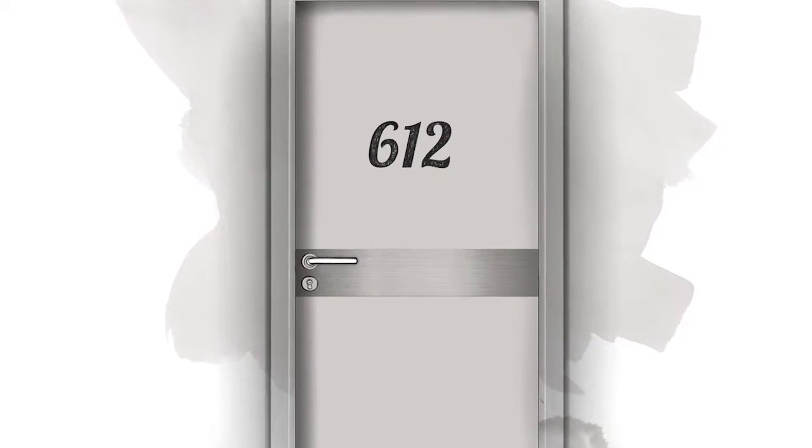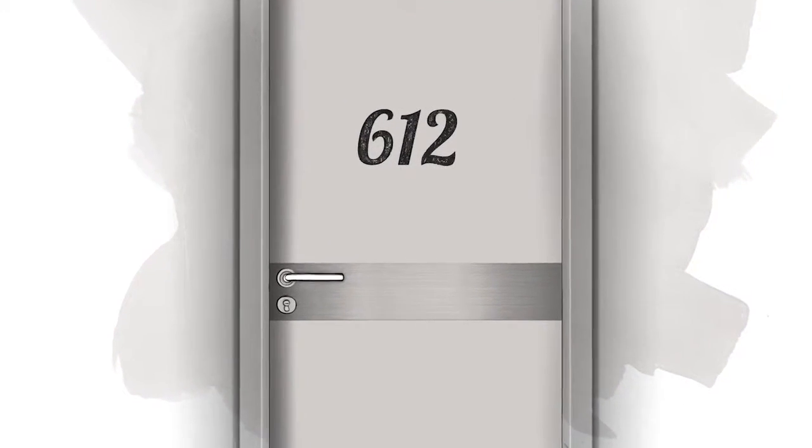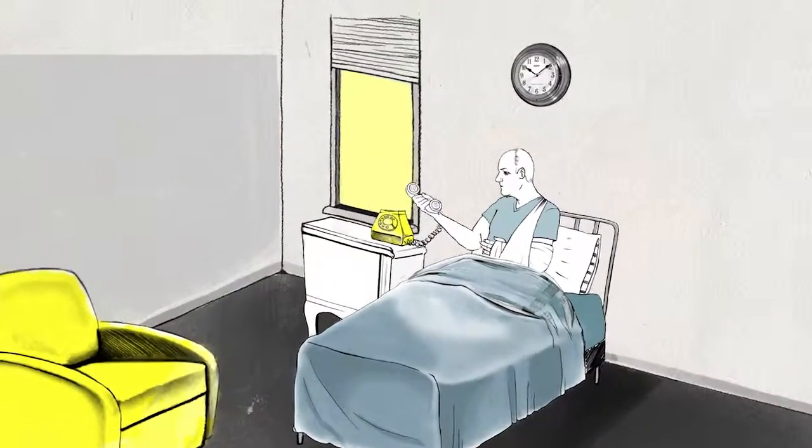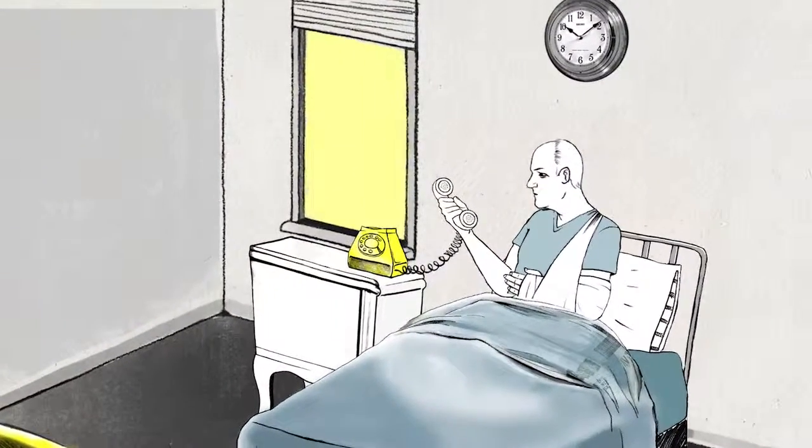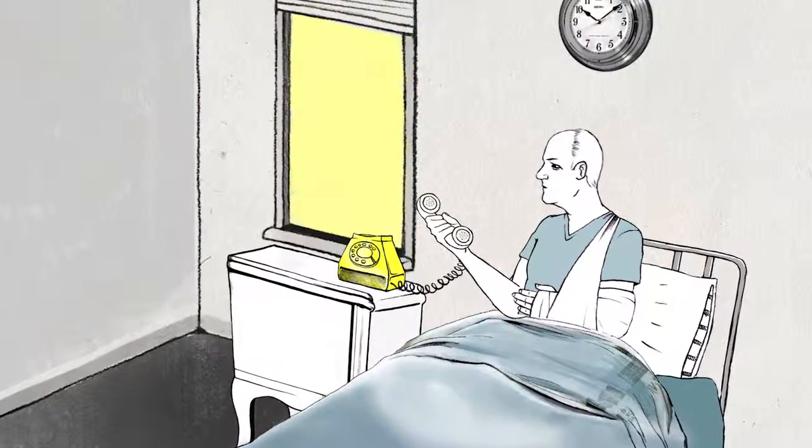It was the day of Norman Brinker's first meeting with the leaders of Chili's. But he found himself here. A polo accident had left him in the hospital with fractured ribs and a paralyzed spleen.